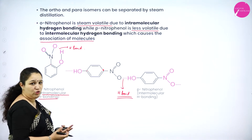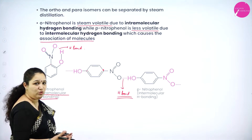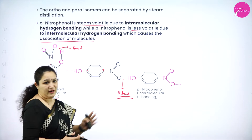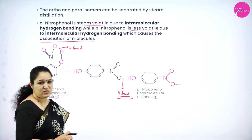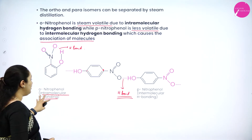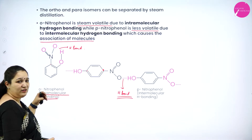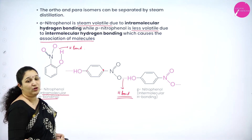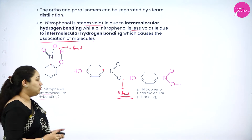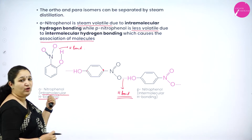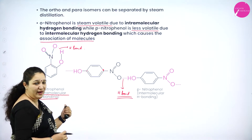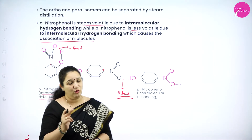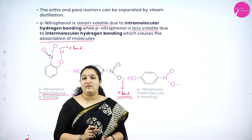Ortho-nitrophenol is steam volatile because there is no intermolecular hydrogen bonding between the molecules — they can escape very easily with no extra energy needed to break bonds. Para-nitrophenol is less volatile due to intermolecular hydrogen bonding, which causes association of molecules. Thus we can separate them by simple distillation.